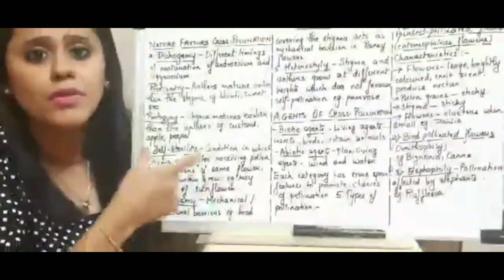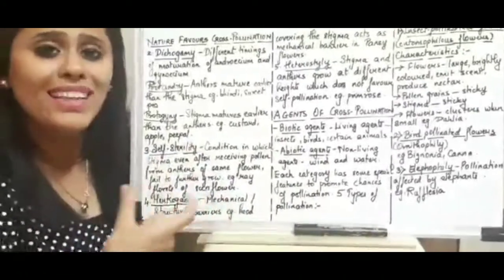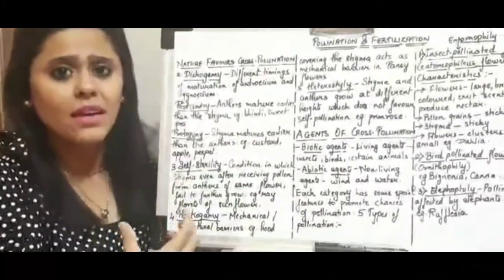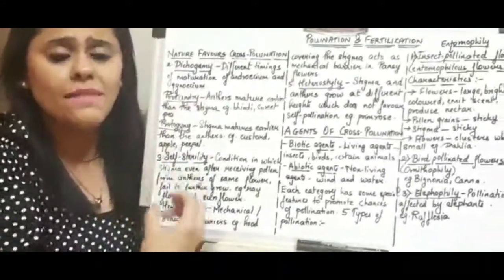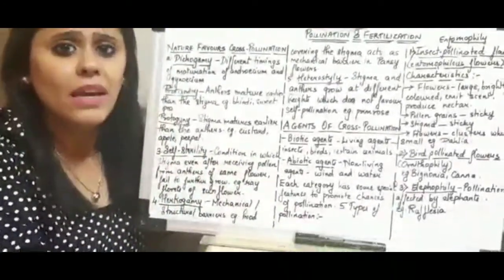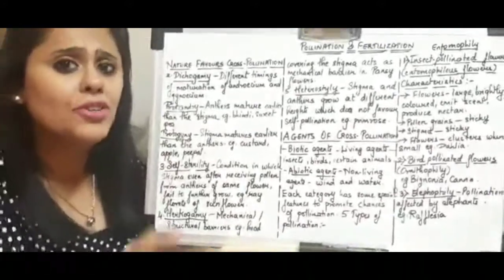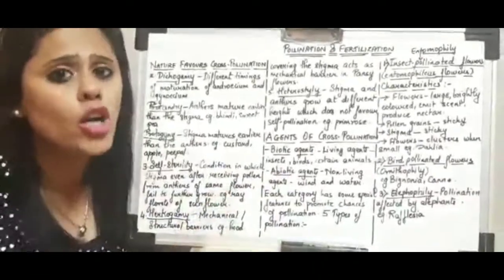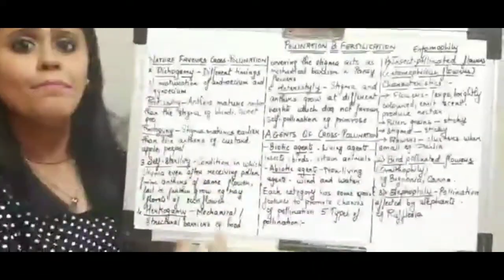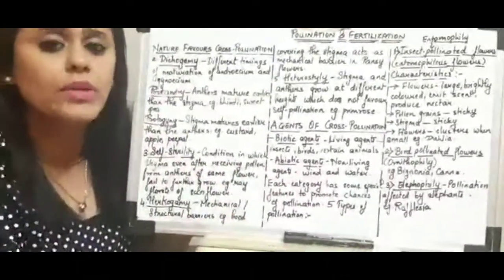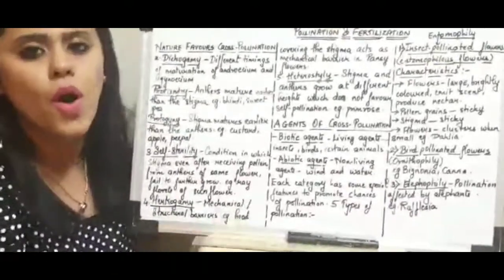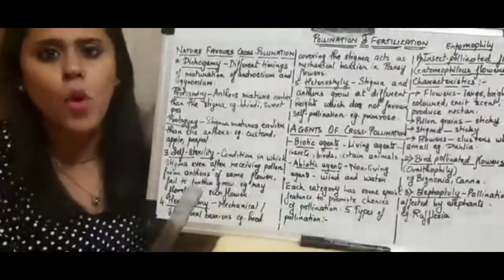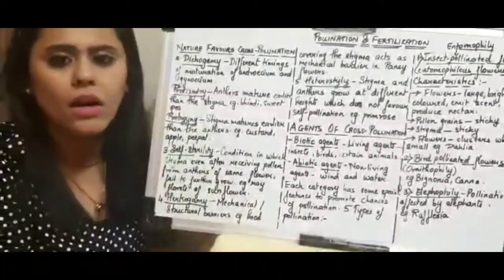That device is given the term self-sterility, where the stigma makes itself self-sterile — meaning even after pollen drops on the stigma of the same flower, it will not accept the pollen or allow the pollen to grow on it. Common examples are the ray florets of the sunflower.